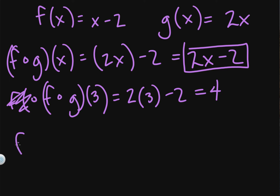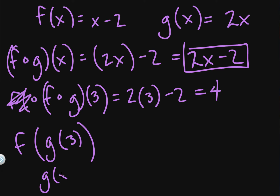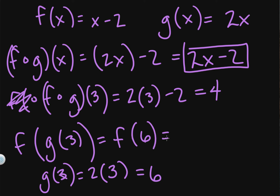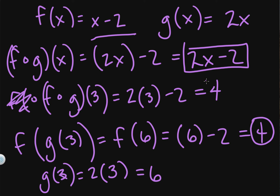Or, f of g of 3 means I can first find g of 3. g of 3 is 2x with x equals 3, so that gives me 6. Then I take that 6 and plug it into my f of x function, giving me f of 6 — which is x minus 2, or 4. You get the same answer both ways. If you only need one input value, it saves time to just plug into the two functions sequentially. If you need to do it more than once, then find the full composition first.